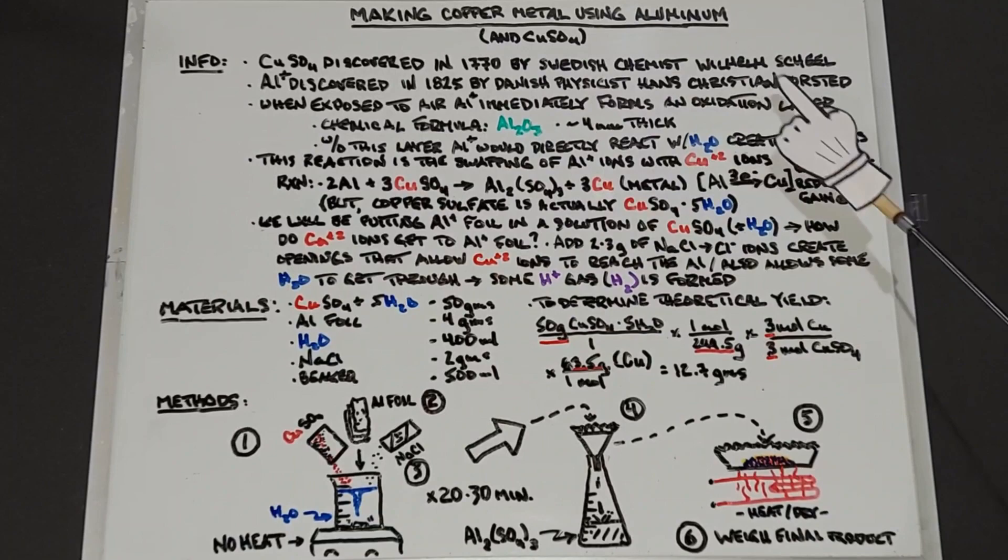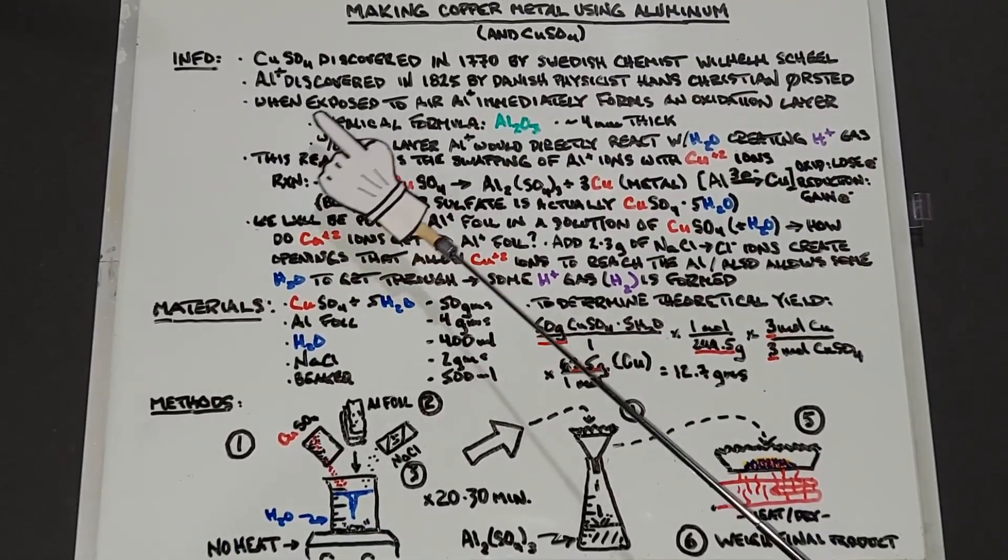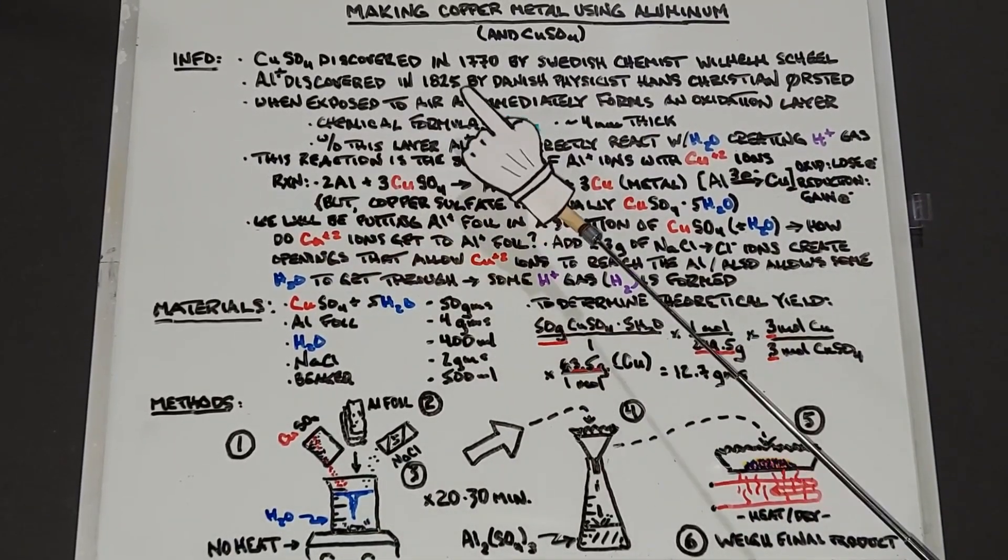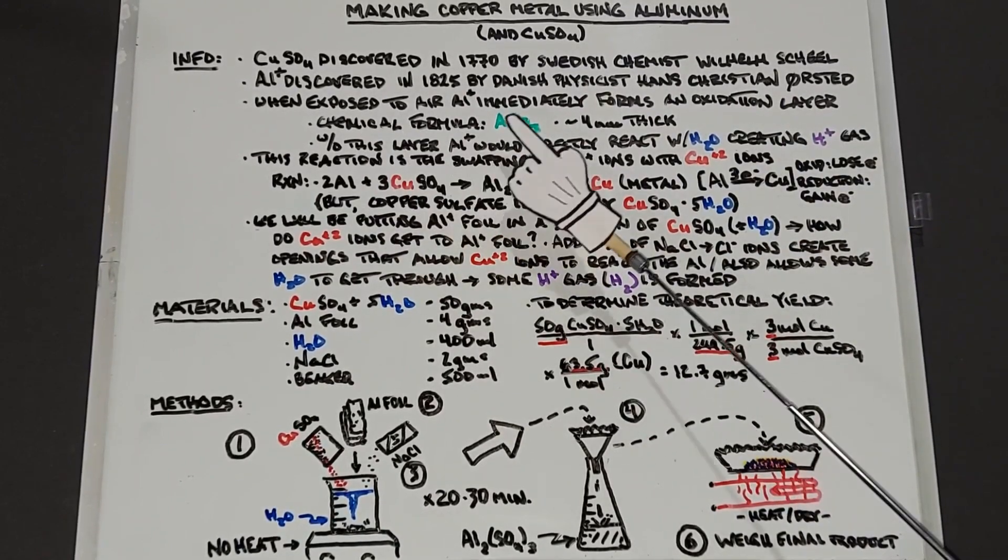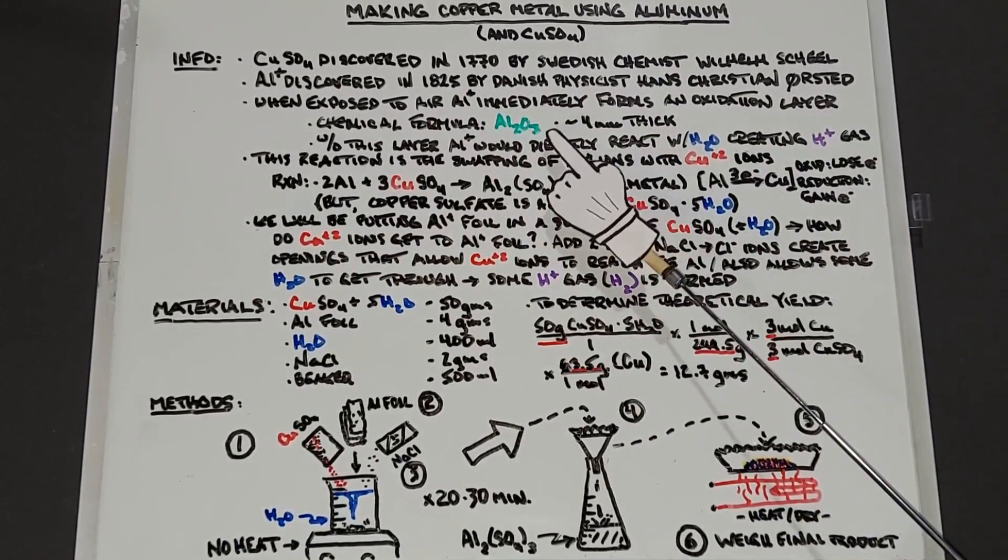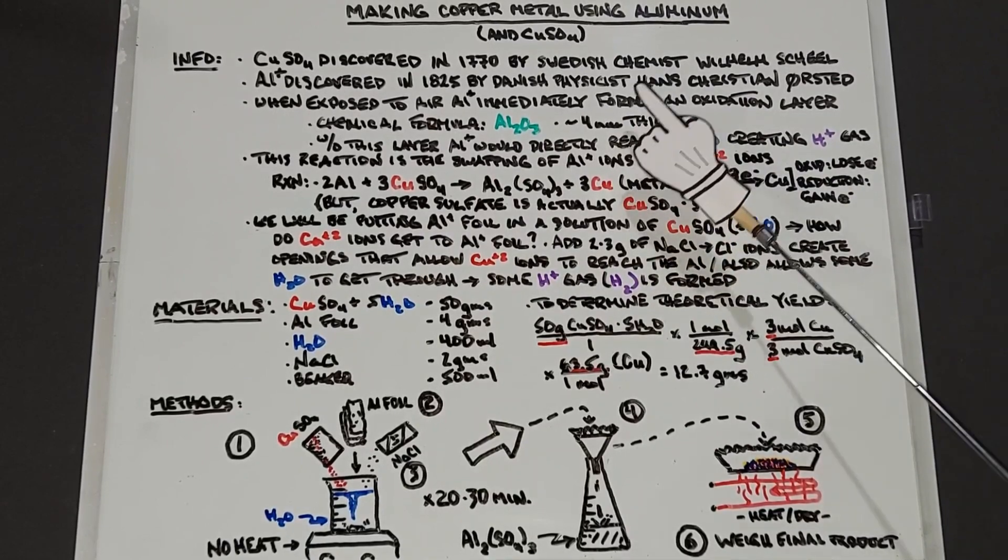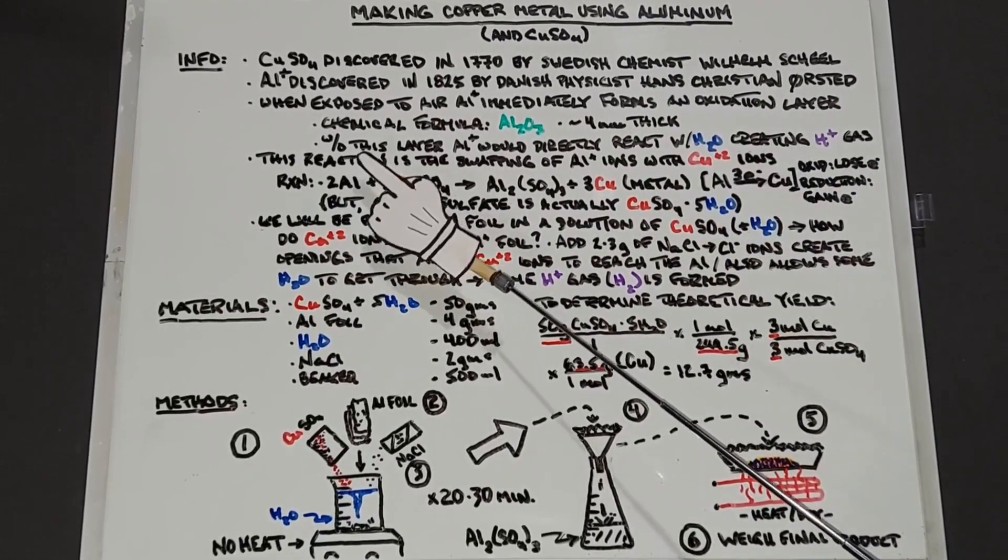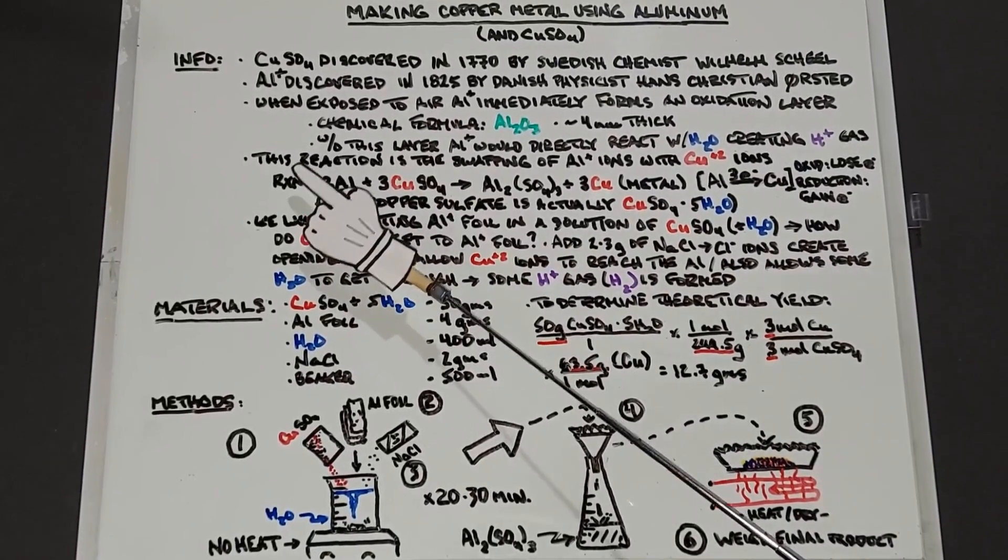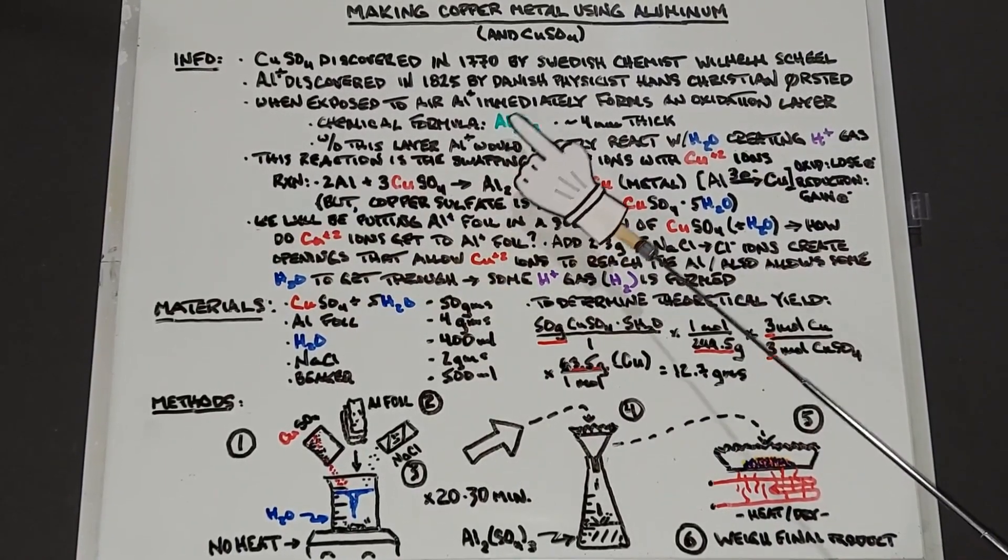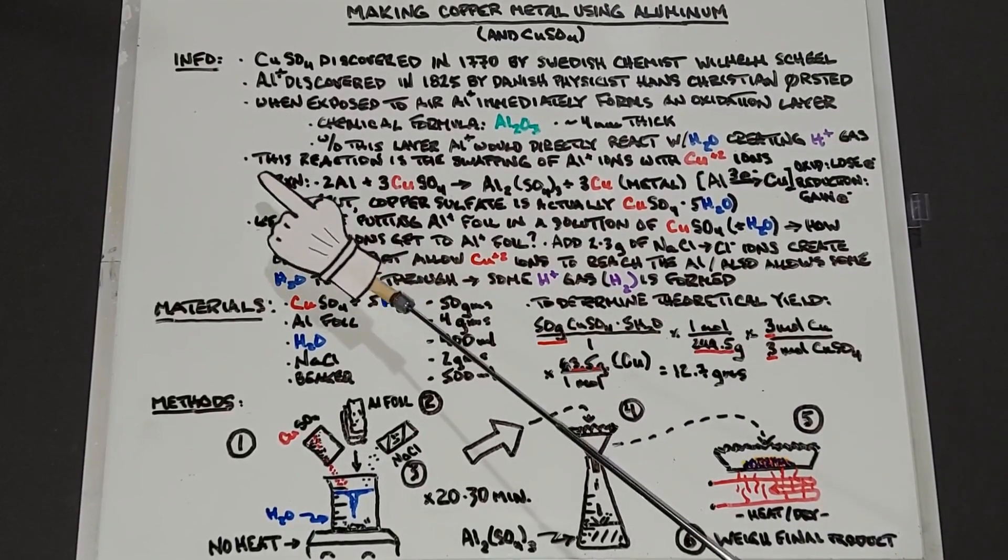When aluminum is exposed to air, it immediately forms an oxidation layer with the chemical formula Al₂O₃. It's approximately four nanometers thick, very thin, but it happens very quickly. Without this layer aluminum would be extremely reactive.